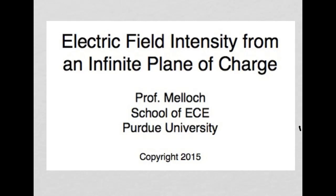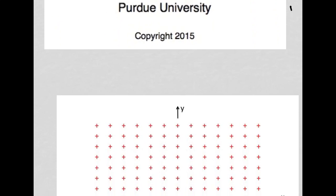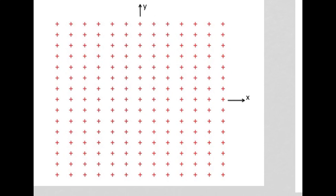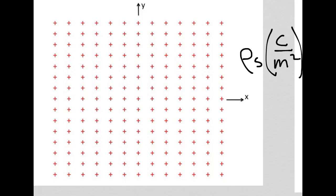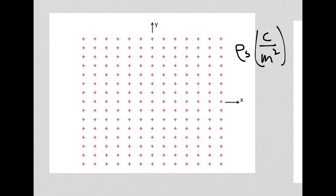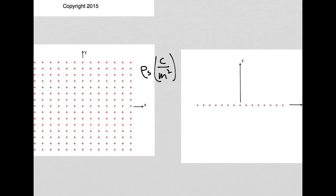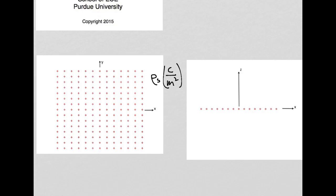Let's find the electric field intensity due to an infinite plane of charge. Let's put that plane of charge in the xy plane. This charge density will be represented by rho sub s and that will be in coulombs per meter squared. To the right here we have a view of our plane of charge from the edge.